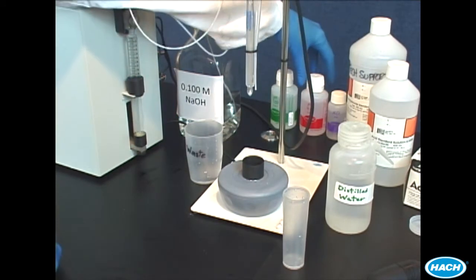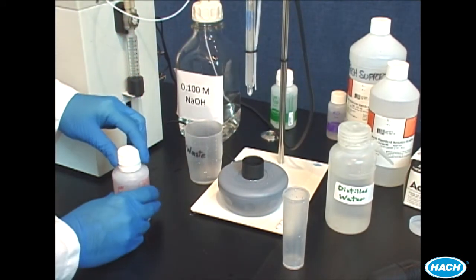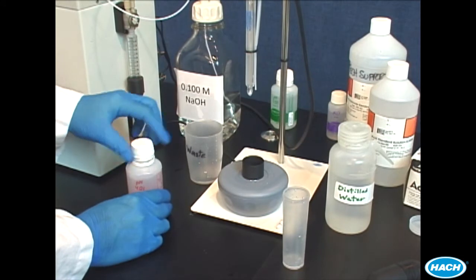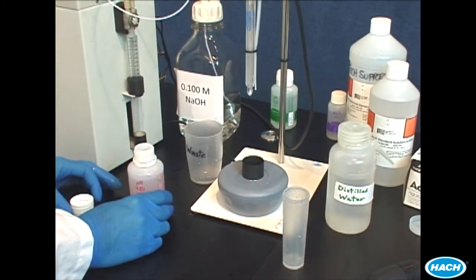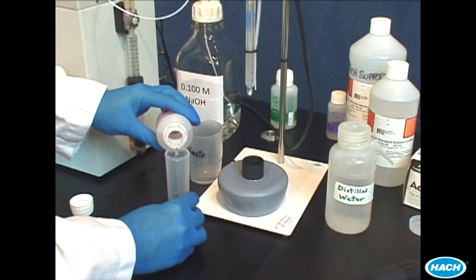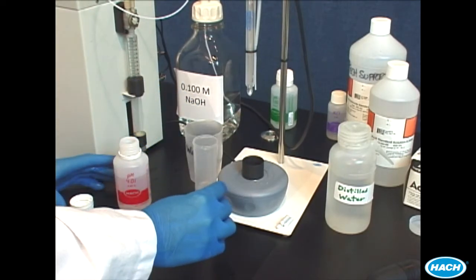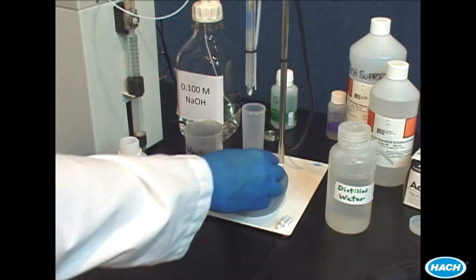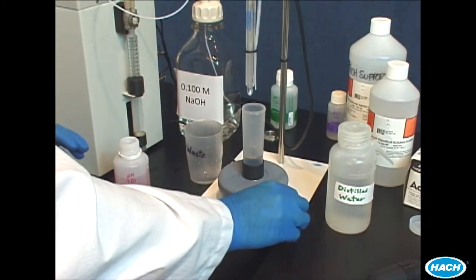We will now calibrate the electrode using pH 4 and 7 buffers. For best results this should be done at least once a day. Pour about 10 milliliters of pH 4 buffer into a titration cell. Add a magnetic stir bar.